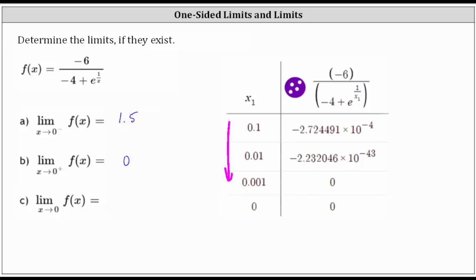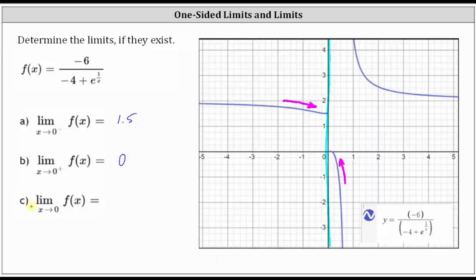For the last limit, we have the general limit — the limit of f of x as x approaches zero. In order for this limit to exist, we must be approaching the same function value from the left and right of zero. As we can see graphically and from our work in the first two parts, this is not the case. Therefore the limit of f of x as x approaches zero does not exist.